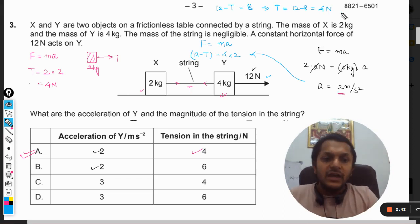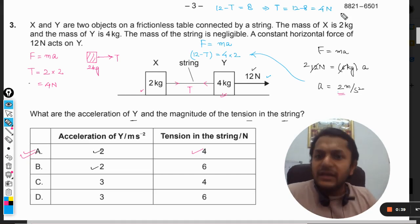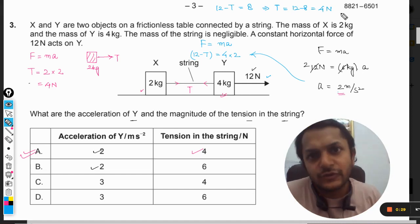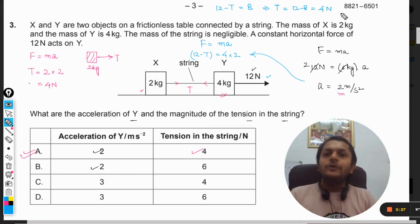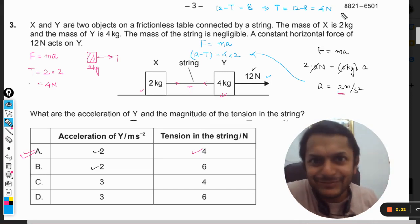So the body Y will be saying that yes, the string is pulling me backward with the force of 4 newton, and X would be saying that the string is pulling me forward by the force of 4 newton. So this is how we solve this question. This is Professor Varun. All the best, bye.